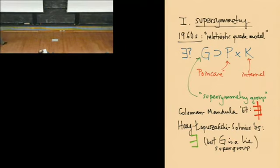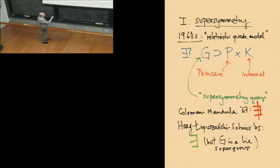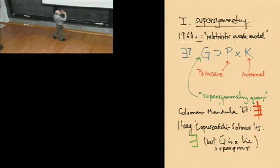The question was: is there some overarching symmetry? They called it supersymmetry — as opposed to a subgroup, you have a supergroup, i.e., a group containing both the internal symmetry group and the Poincaré group. Some people referred to this as a relativistic quark model. There was a famous no-go theorem by Coleman-Mandula in 1967 that said under some conditions no such group exists — the group had to be precisely just the product P cross K.